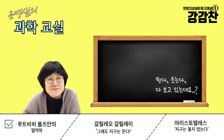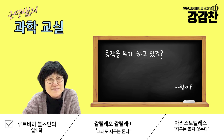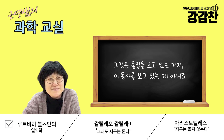뛰는다, 웃는다 다 보고 있는 것 같지만, 실제로는 뛰는 동작을 보고 있는 거죠. 그 동작을 사람의 물질이 하고 있는 거예요. 그러니까 물질을 보고 있는 거지, 동사 자체를 보고 있는 게 아닌 거죠.